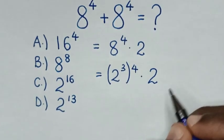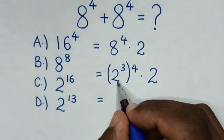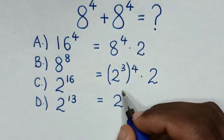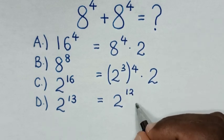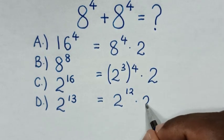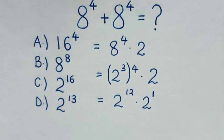Then, in the next step, it will be equal to 2^(3 times 4) is 2^12, then times 2 is same as 2^1.